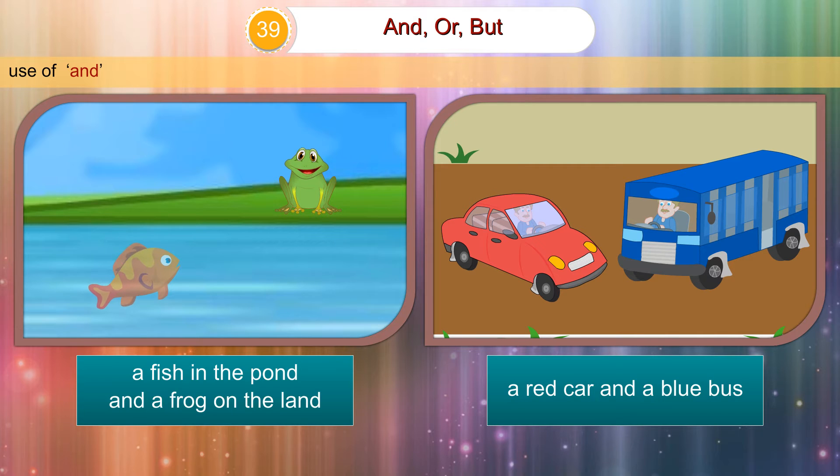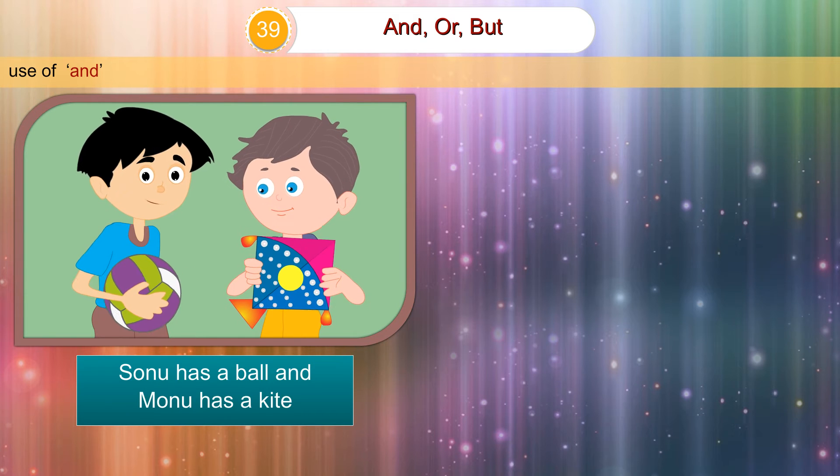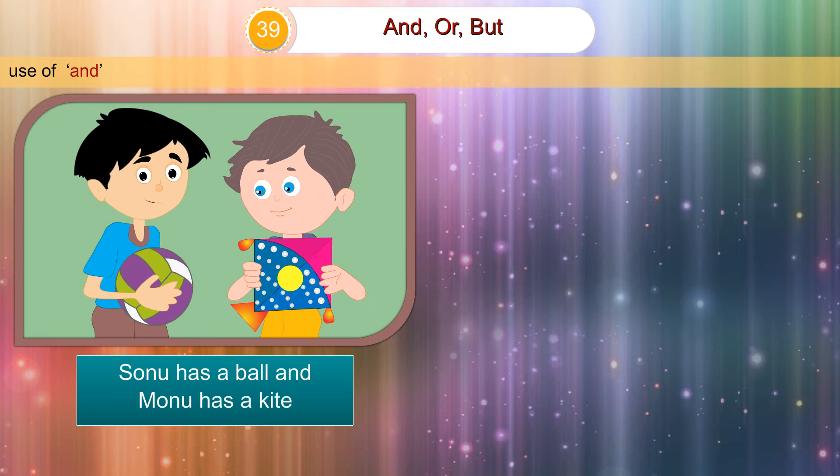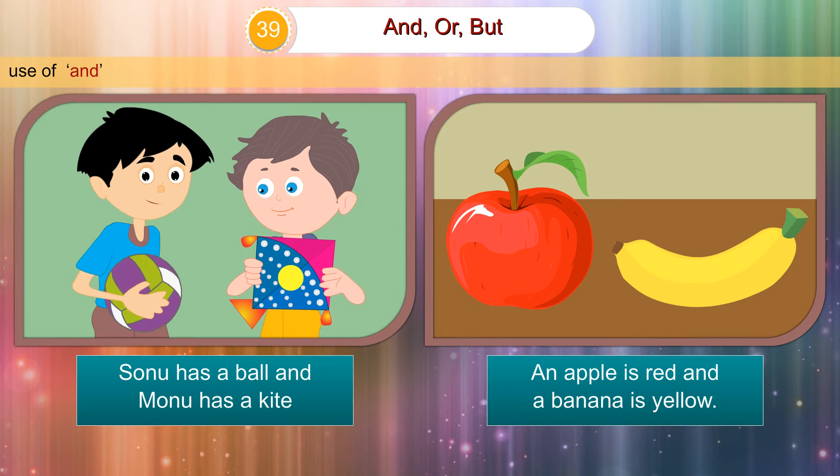A red car and a blue bus. Sonu has a ball and Monu has a kite. An apple is red and a banana is yellow.